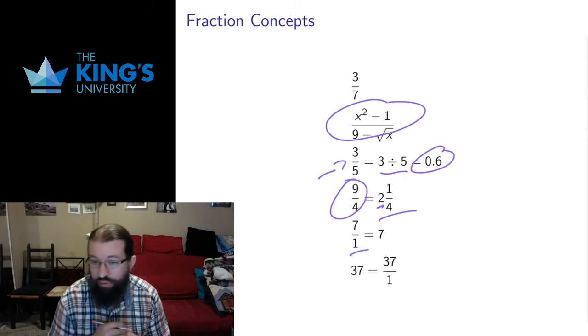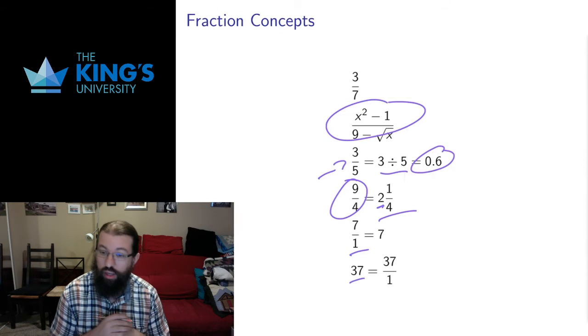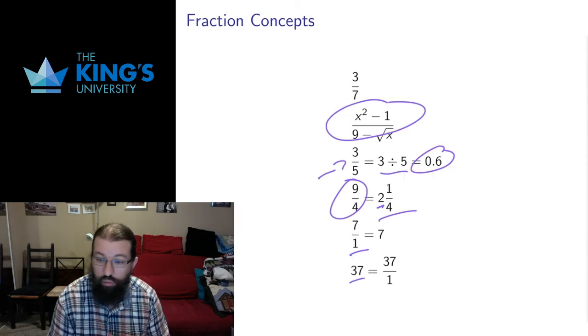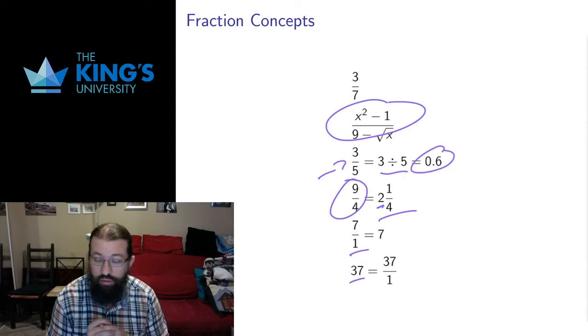Dividing by one doesn't do anything, so the fraction seven over one is the same as the number seven. That's a notational thing. It's very good to know that ones in the denominators can just be removed—we can just write it as the number seven. We can go the other way if we want. If we sometimes want to write a whole number as a fraction, I'll write the number 37 as 37 over 1.